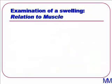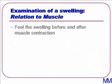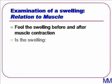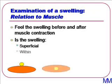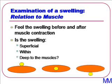In order to assess the relationship of the lump to muscle, we need to get the patient to contract the regional muscles while palpating the swelling. We need to decide if the swelling is superficial to muscle, in which case it is still clearly palpable upon muscle contraction; is it within the muscle, in which case it is not quite as palpable; or is it deep to muscle, when we would not be able to palpate it at all after muscular contraction?